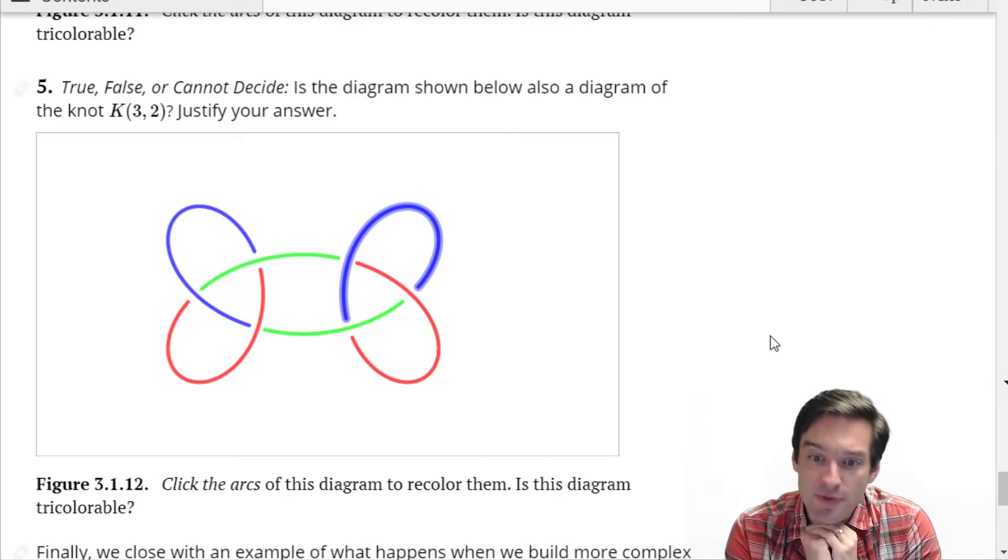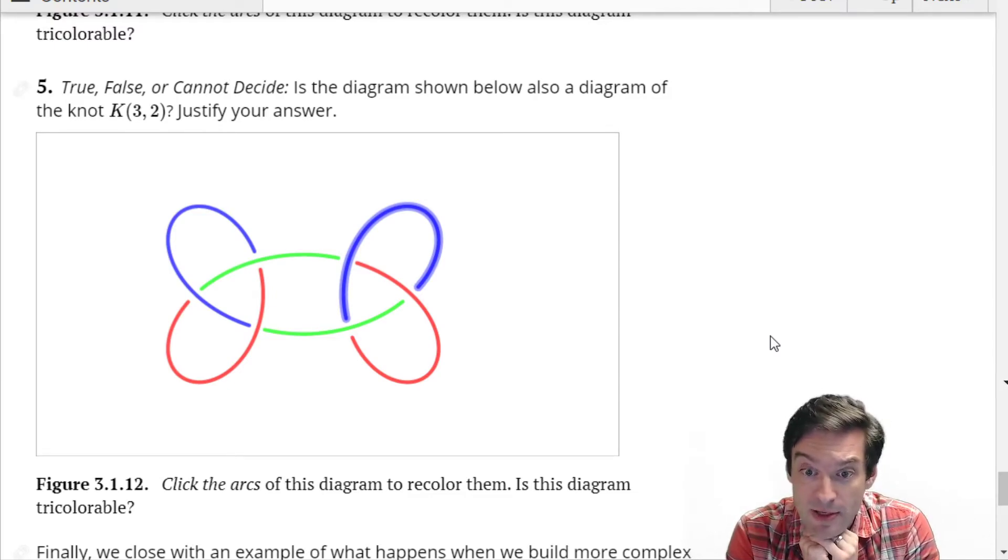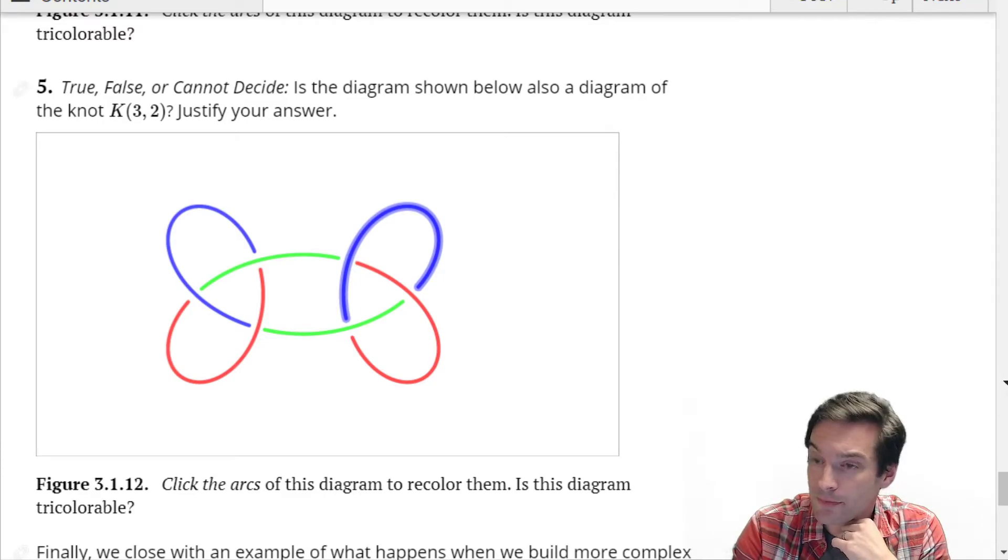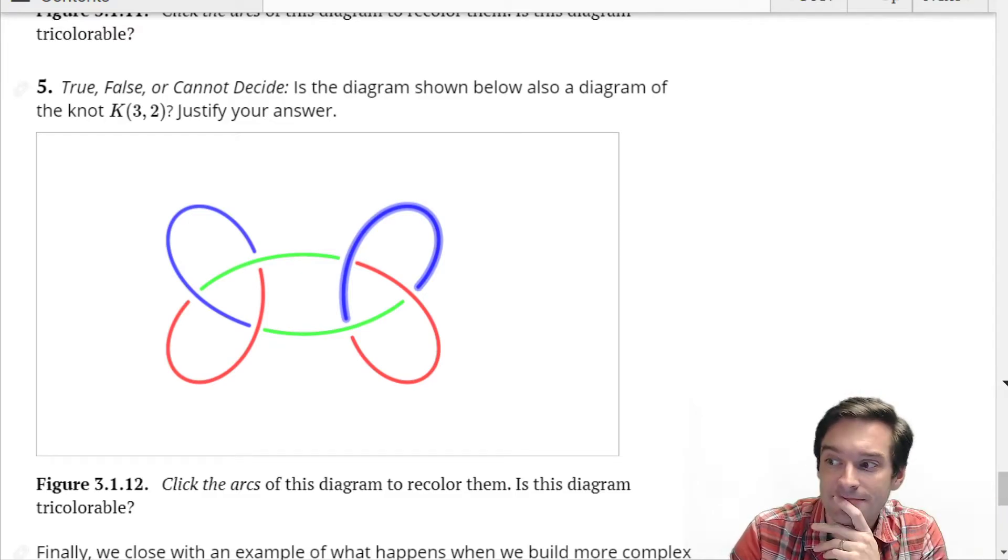Does anybody see a different way we could tricolor this? Like fundamentally different way of using three colors in this diagram? Is there a simpler tricoloration? Besides the one that uses all the same color. This part's going to help you with question six, if we get it now. This insight will be enough for us to wrap for the day, so we will earn our closing time.